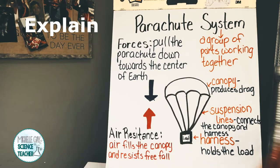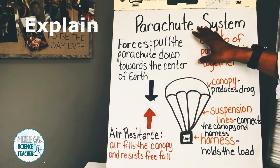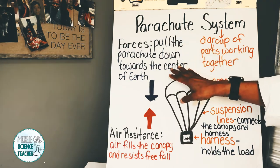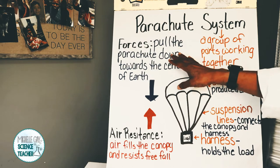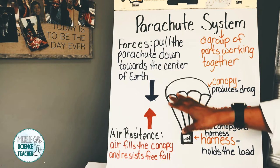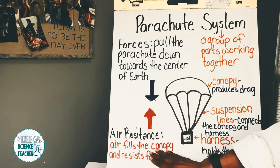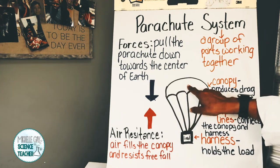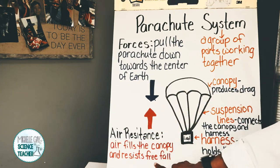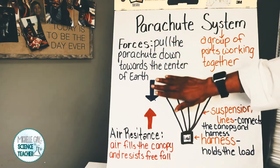Let's talk about the parachute system. There are two forces pulling on the parachute. One force pulls the parachute down towards Earth — we know that force is called gravity. Gravity pulls everything towards the center of the Earth. The second force is air resistance, which is drag. Drag is the air that fills the canopy — the top part of the parachute — and it resists free fall. The air pushes up into the canopy while gravity pulls down.